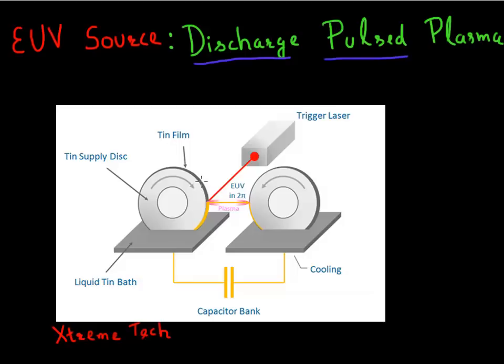What it means is essentially you have these two tin baths. So you have two of these baths which are filled with molten tin. And you have these discs rotating, and they essentially pick up tin on its surface whenever it dips into the bath. Then you hit one of these circles. First of all, you apply a voltage here, and then you hit this with a laser pulse.